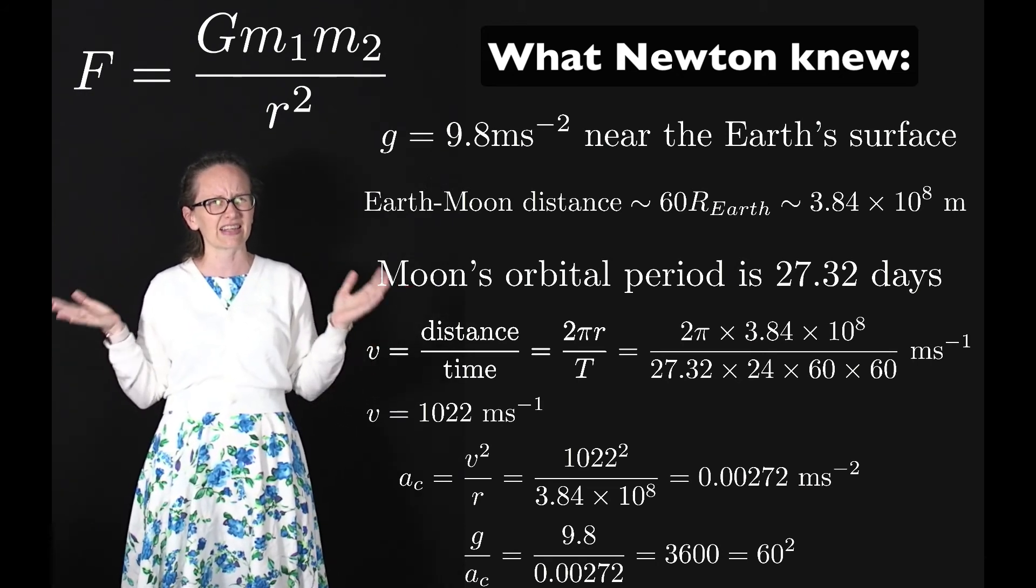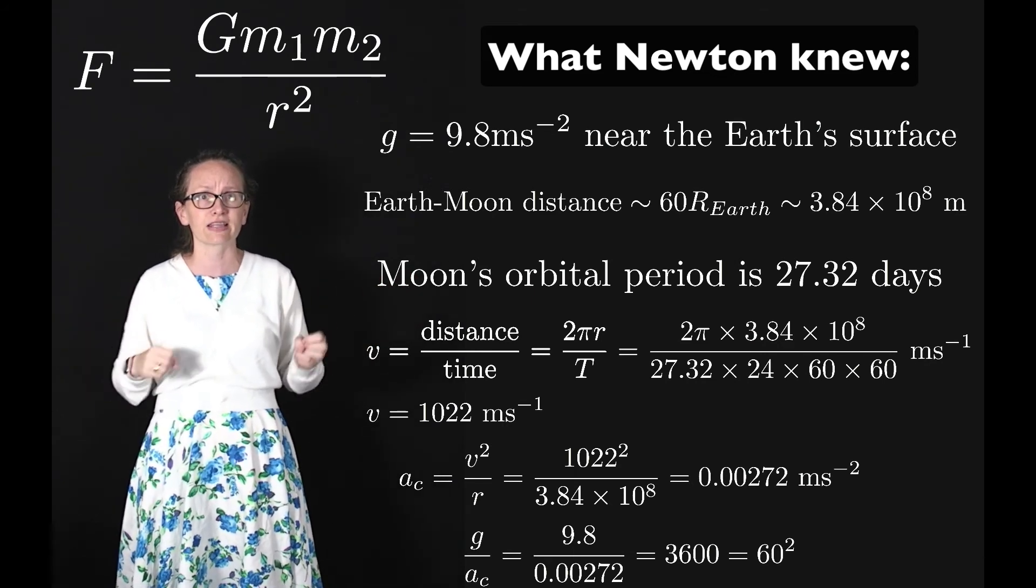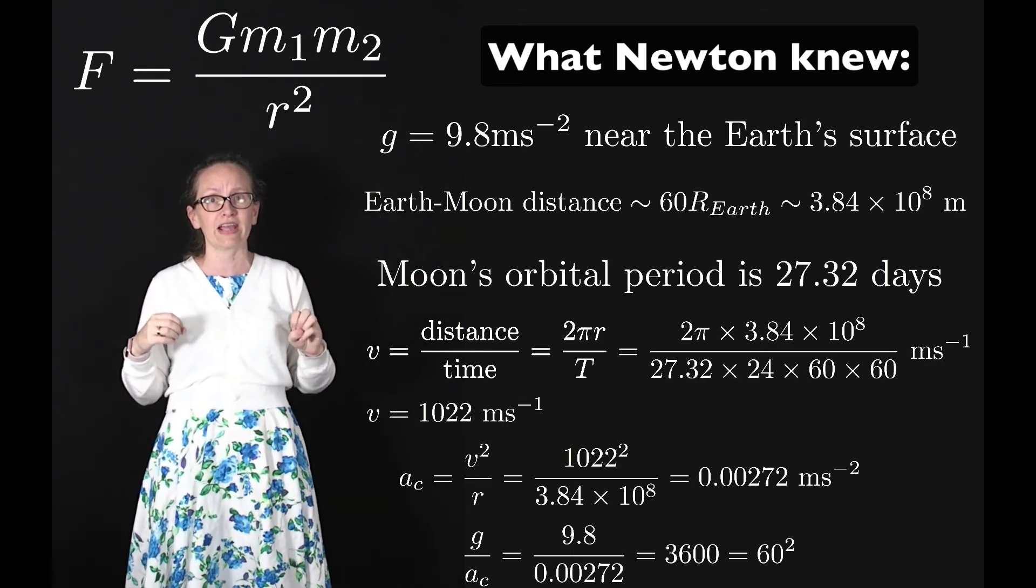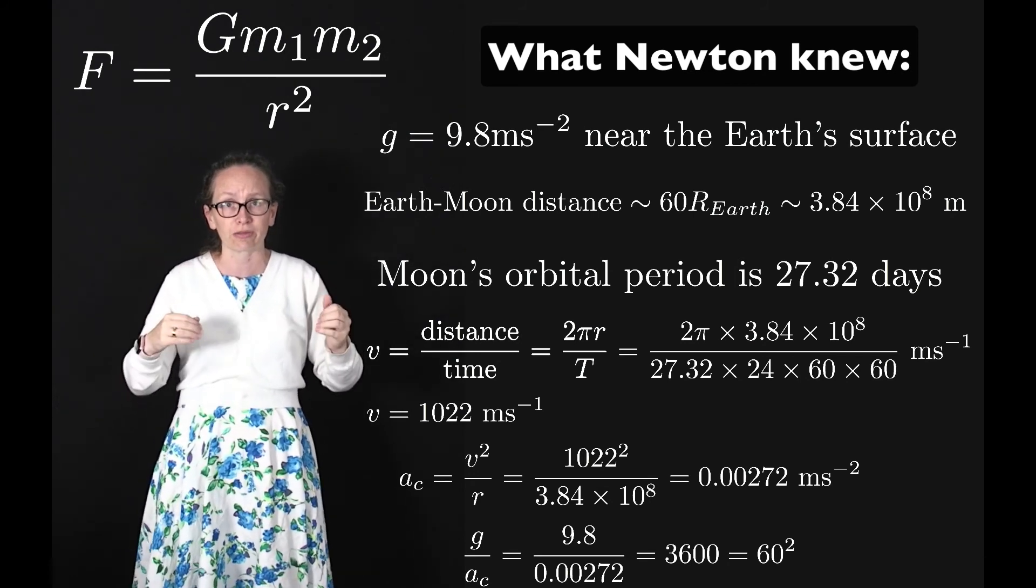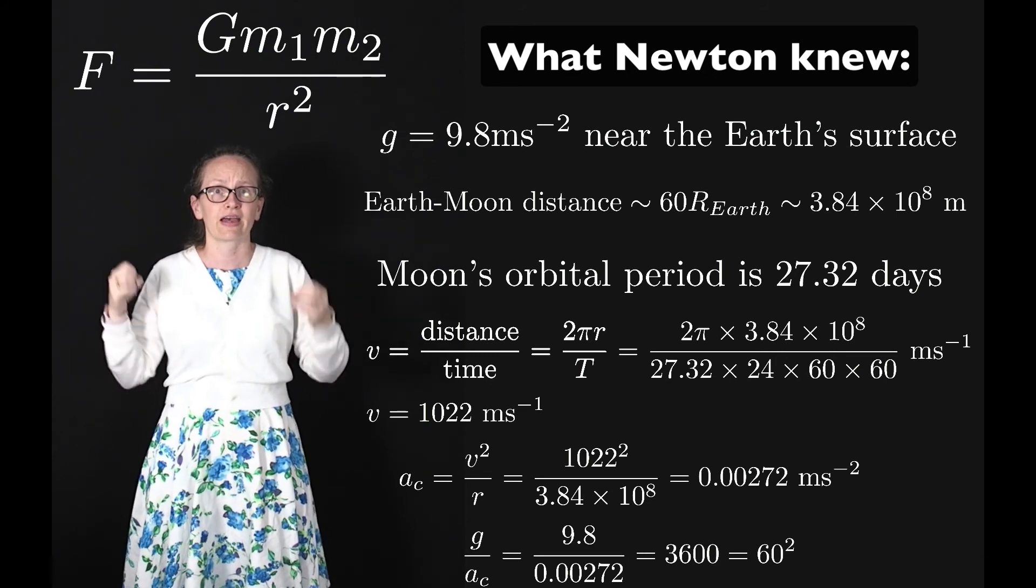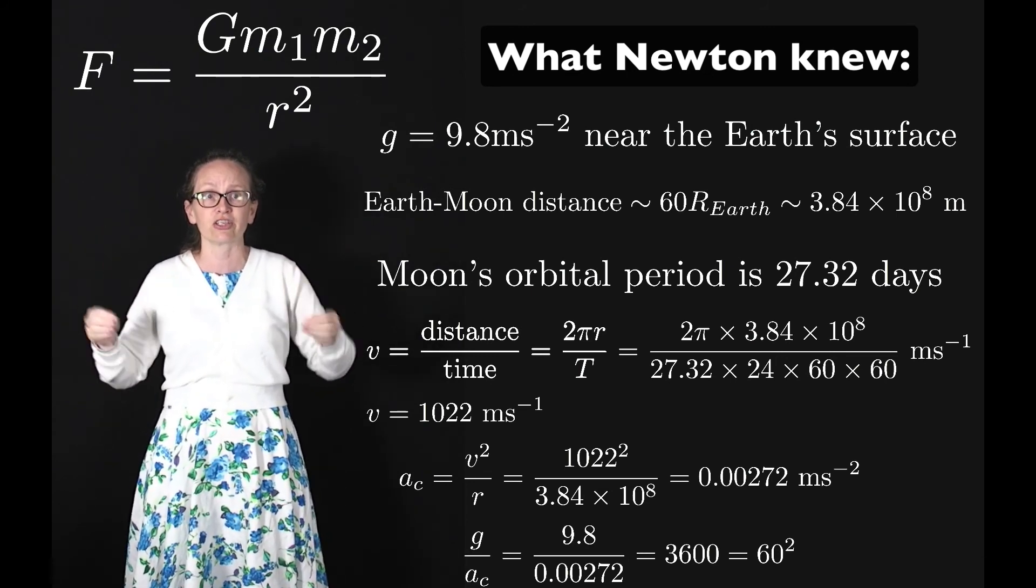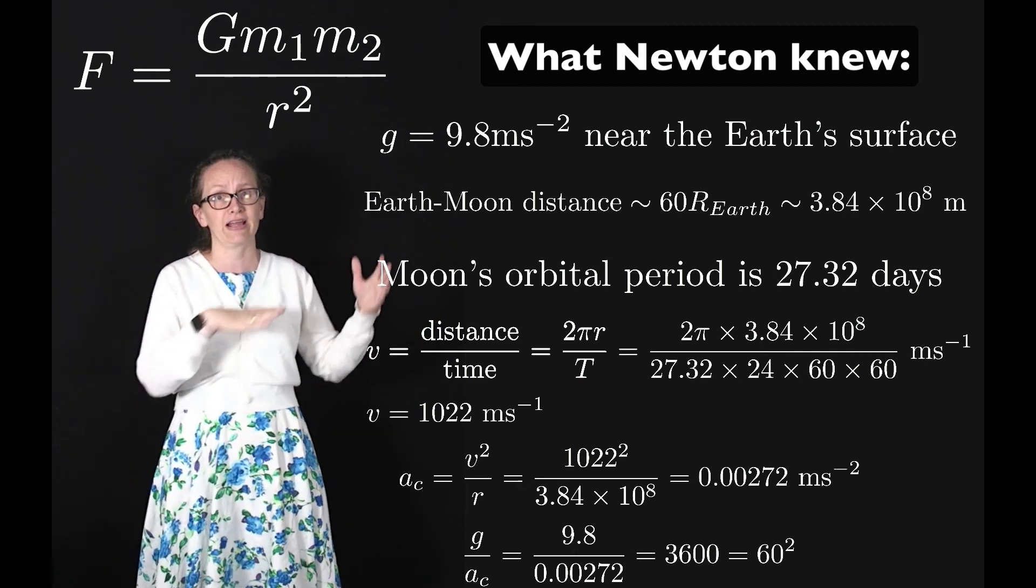And then he was like, 60! That's familiar! Where else is this 60? He realized that the Moon was 60 Earth radii away from the center of the Earth. This made Newton realize that the Universal Law of Gravitation is an inverse square law where it's inversely proportional to the radius squared.